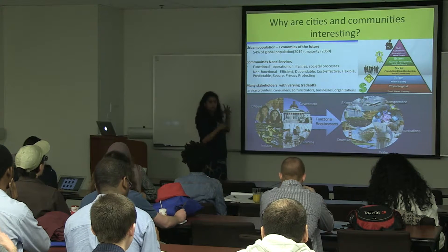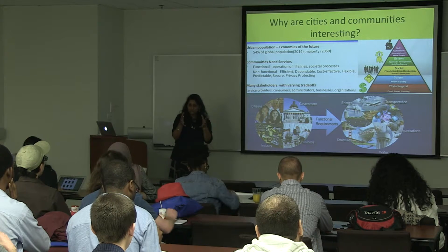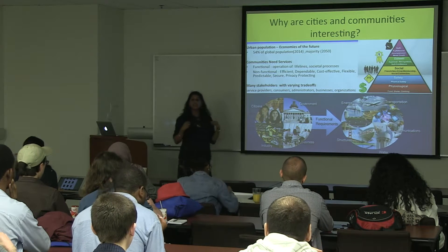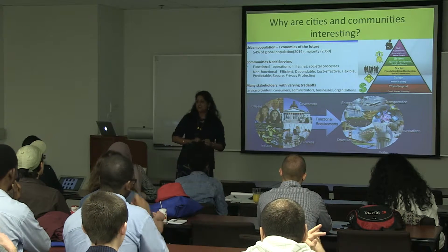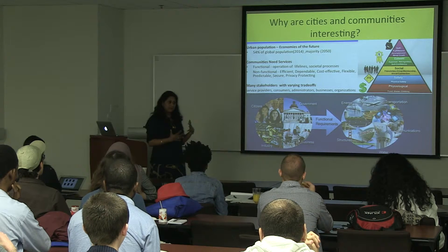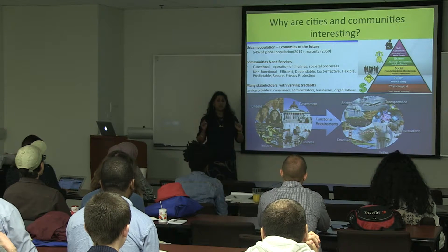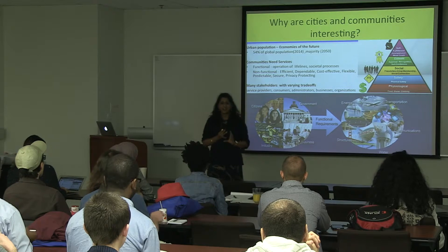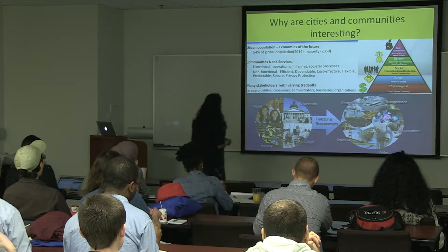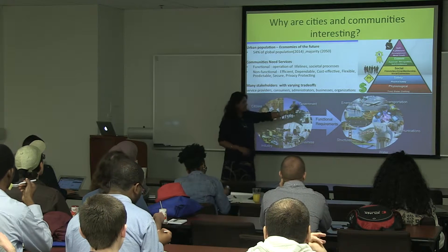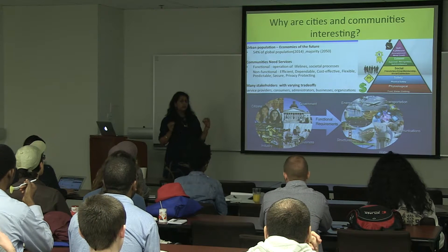Cities are made of various communities — large, small, very wide, very focused — and these communities need a variety of services. As computer scientists, we think about services, service-oriented computing, web services. But from a community context, communities need services that might be very functional: I need my water utility to work, I need power to work despite small infrastructure problems. I need the basic lifelines — energy, transportation, water, buildings — working normally.